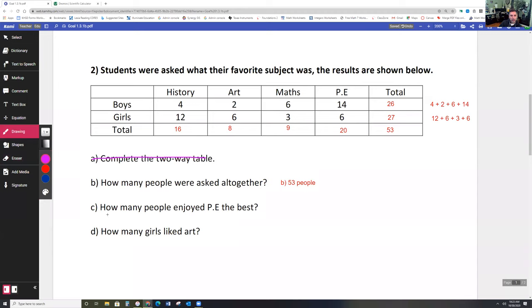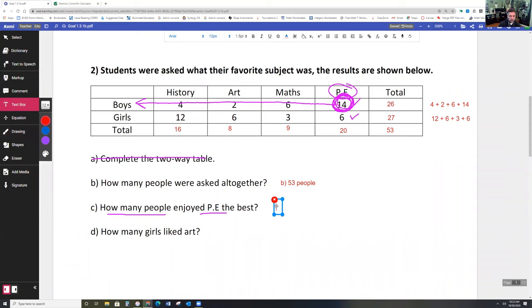And then if we look at our next one, the next one is how many people enjoyed P.E. the best? So here's P.E. And then you have 14 and 6. Well, 14 is bigger than 6, so this group enjoyed it the most. And if you look at this one, typical boys, boys enjoyed P.E. the most, right? Girls don't like to run, whatever they do, but I guess some of them do because some of them did answer that.